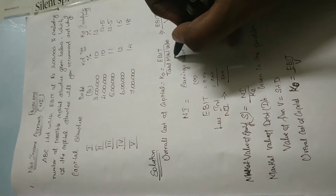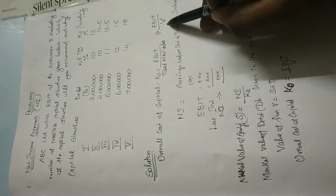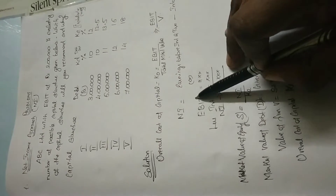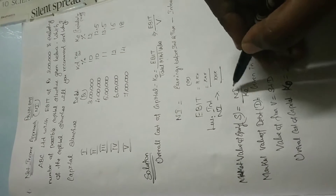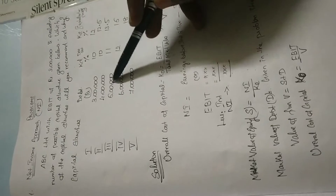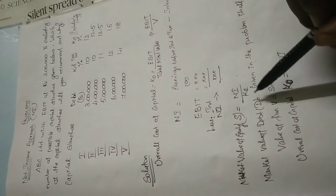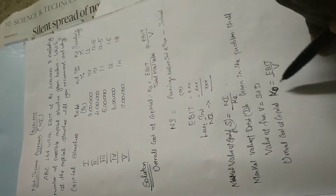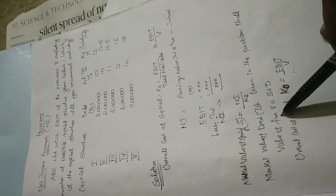Now we are going to provide the solution. First, we need to find the overall cost of capital KO = EBIT divided by V. Before that, we have to find the net income — EBIT minus interest. Then we find the market value of equity as NI divided by KE. The market value of debt is already given. Then we find the value of the firm V = S plus D, and finally the overall cost of capital KO = EBIT divided by V. Based on the higher market value of the firm, we will decide which capital structure is the feasible one.